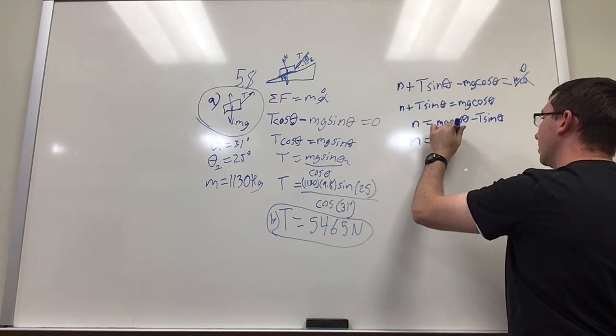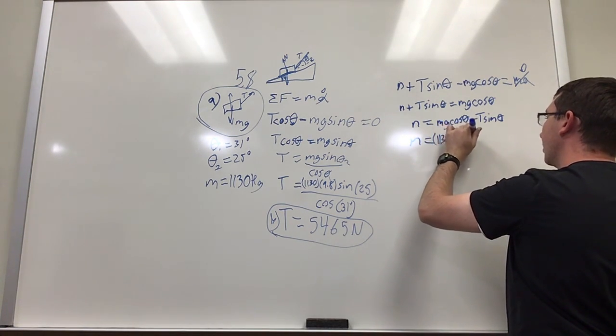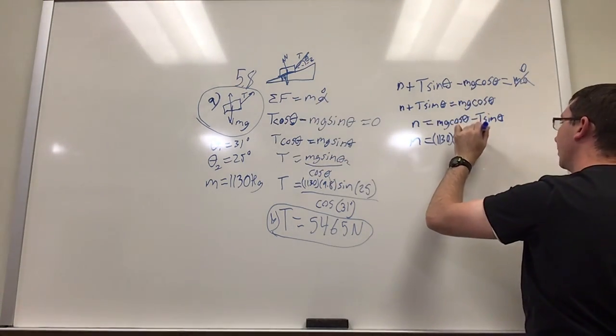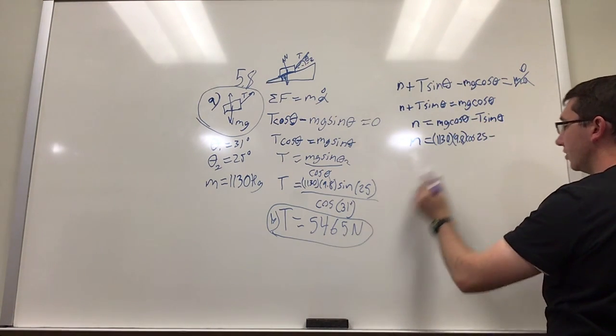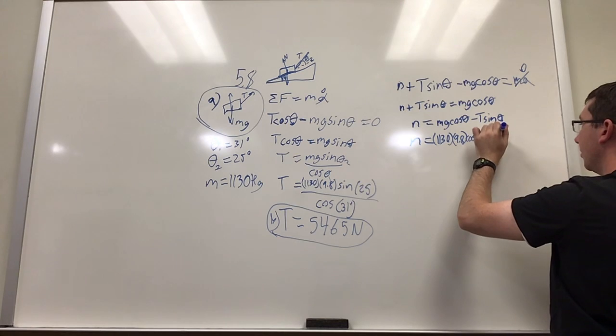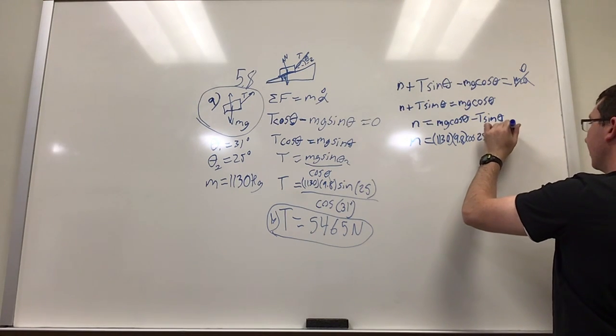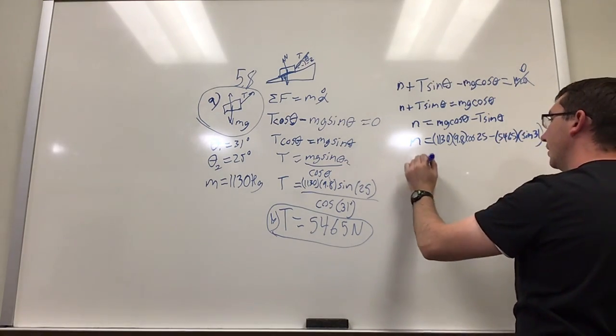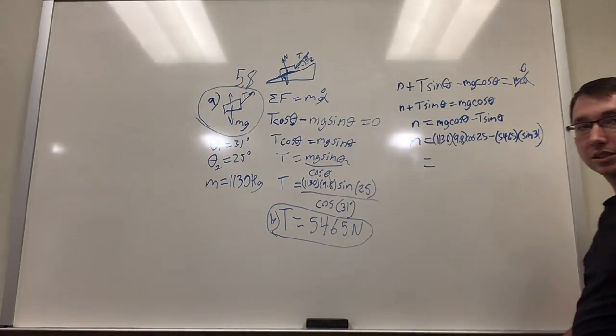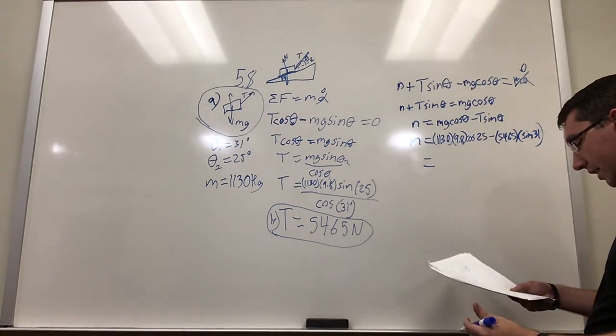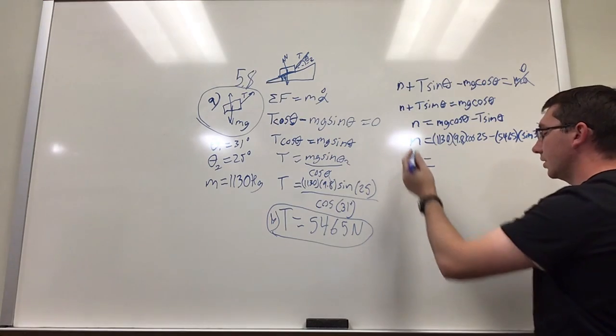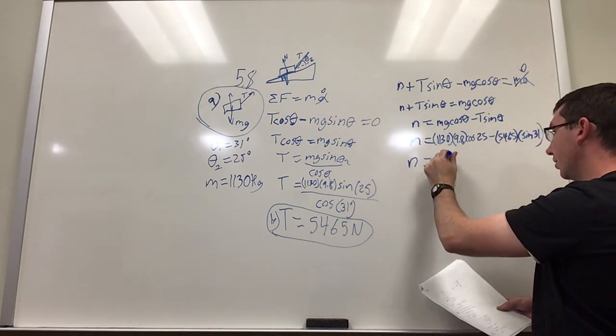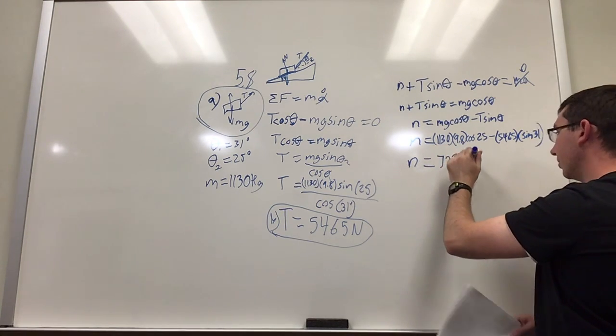1130 times 9.8 times cosine of 25 degrees minus our tension from the last problem, 5465 times sine of 31, and that equals, when you do all the math, the normal force is equal to 7,232 newtons.